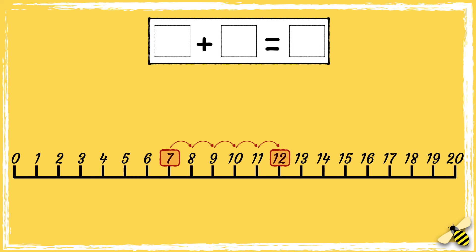Let's see how you got on. So we started on 7, so 7 is the first part of our number sentence. We've made 5 jumps, so we've added 5. And the number we landed on is 12, so 12 is the answer.